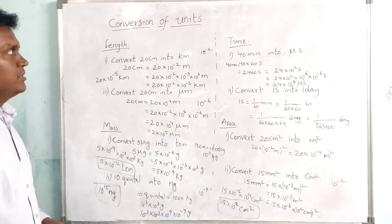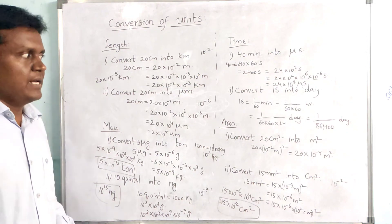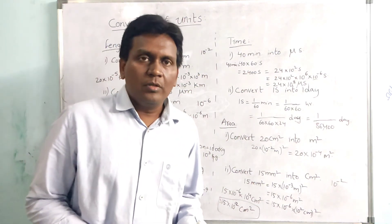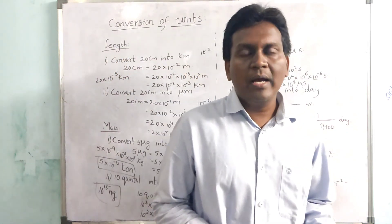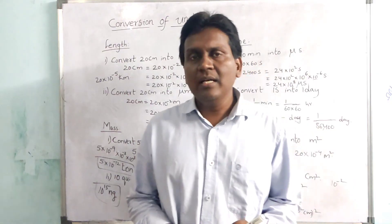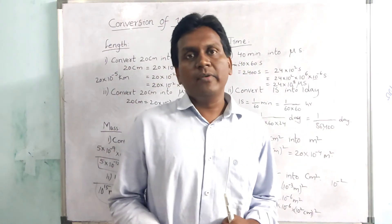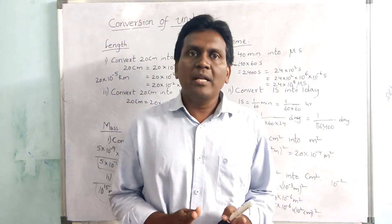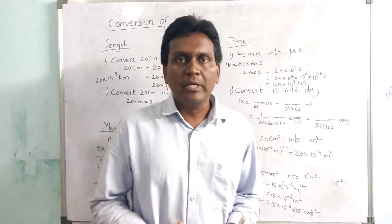These are the conversions of units based on length, mass, time, and area. The two steps to follow are: convert the given unit into SI unit first, then convert that SI unit into the desired unit.